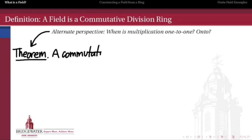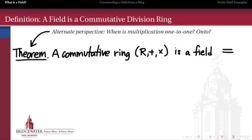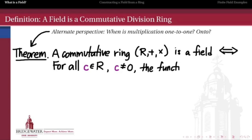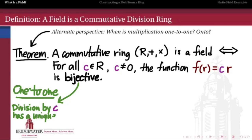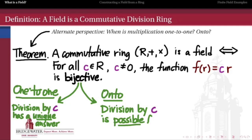Here's a theorem: looking at the one-to-one-ness and onto-ness of multiplication maps can tell us when a commutative ring is a field. A commutative ring is a field if and only if, for any non-zero member c of that ring, the multiplication by c function f(r) = cr is a bijection — it must be one-to-one so that dividing by c always gives a unique answer, and it must be onto so that division by c is always possible. In other words, every non-zero c must be a unit, which is another definition of a division ring, and since our ring is commutative, that makes it a field.